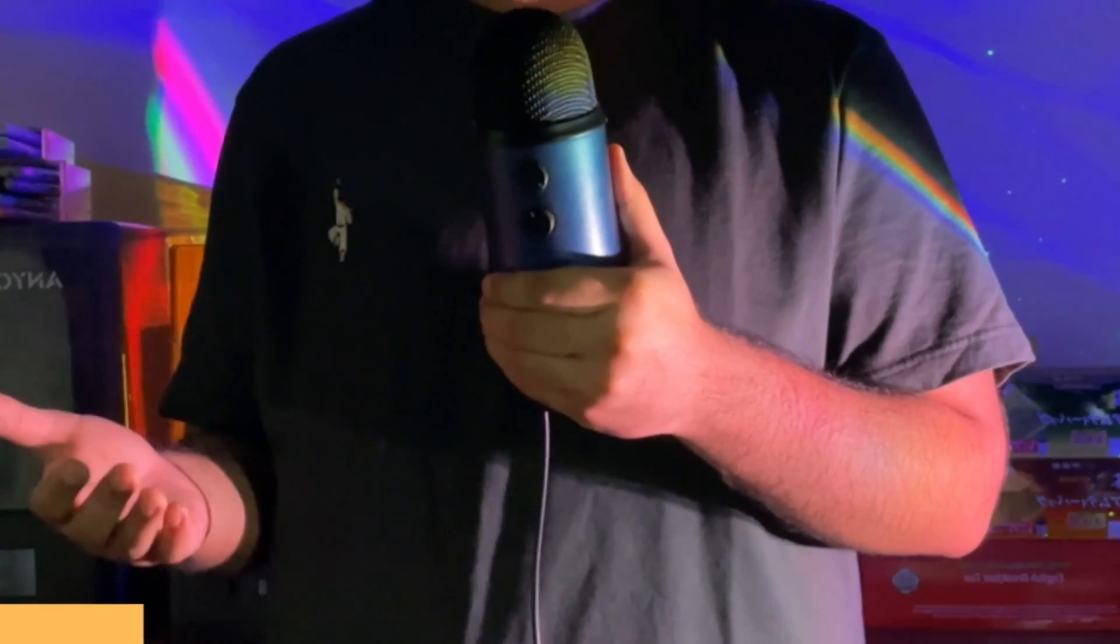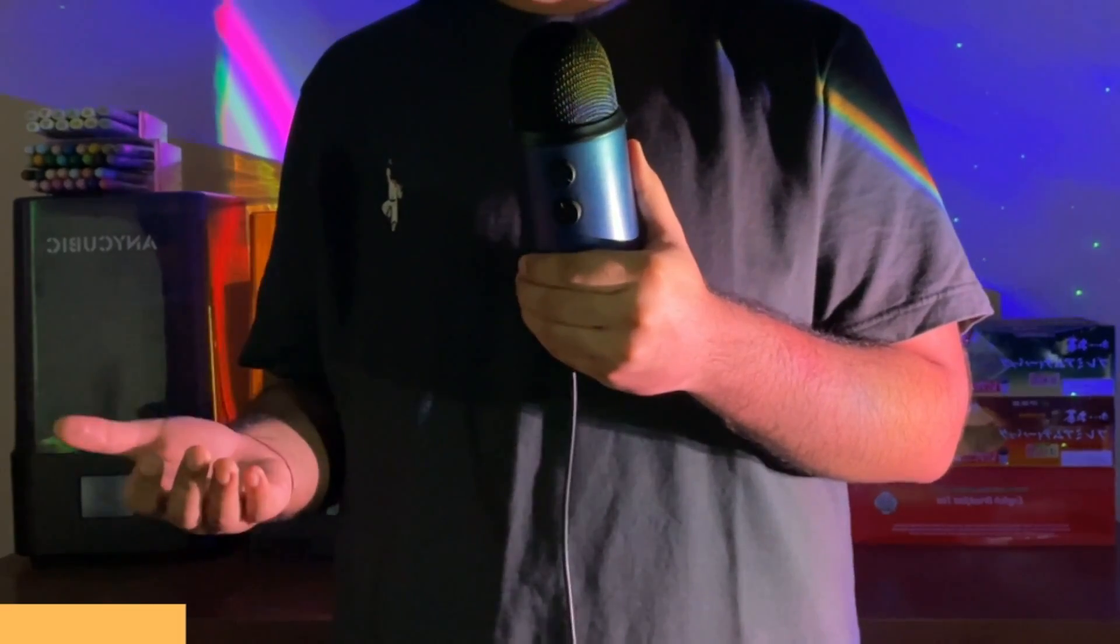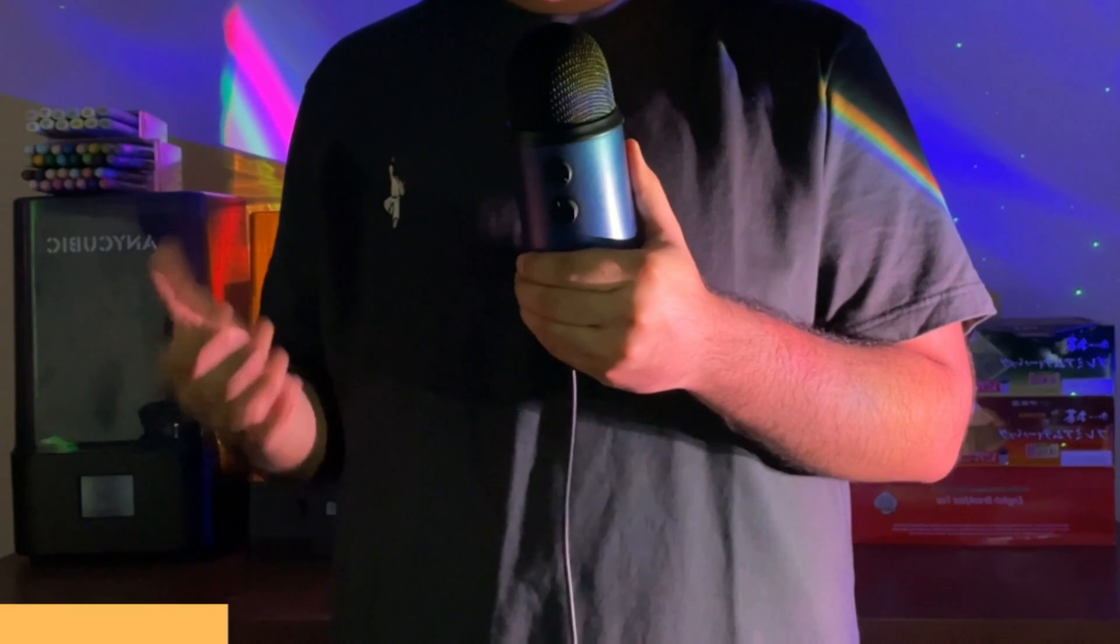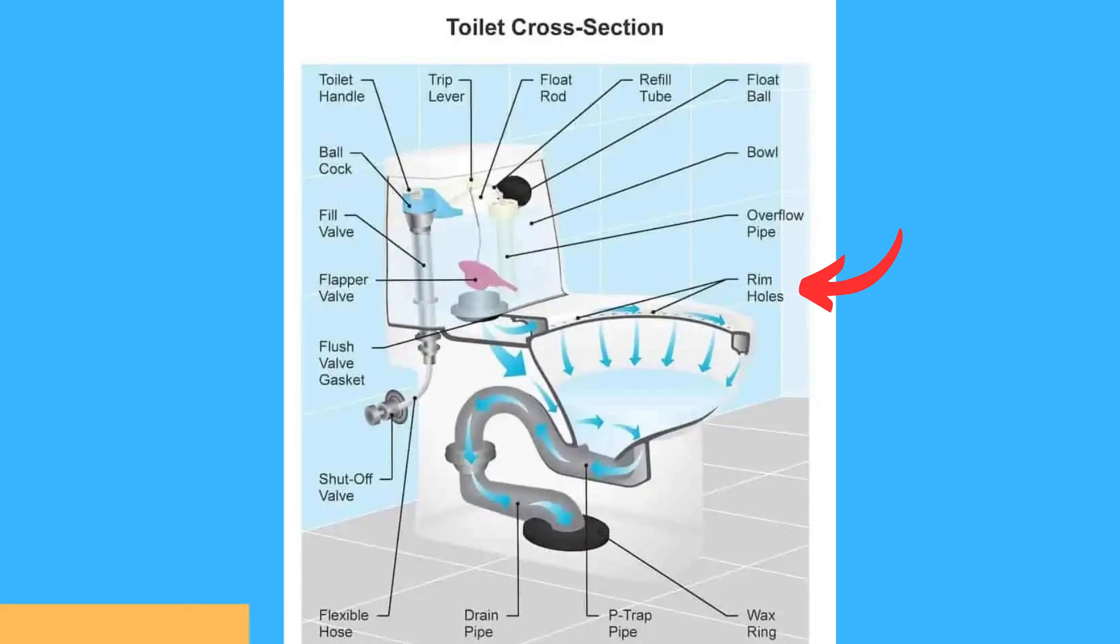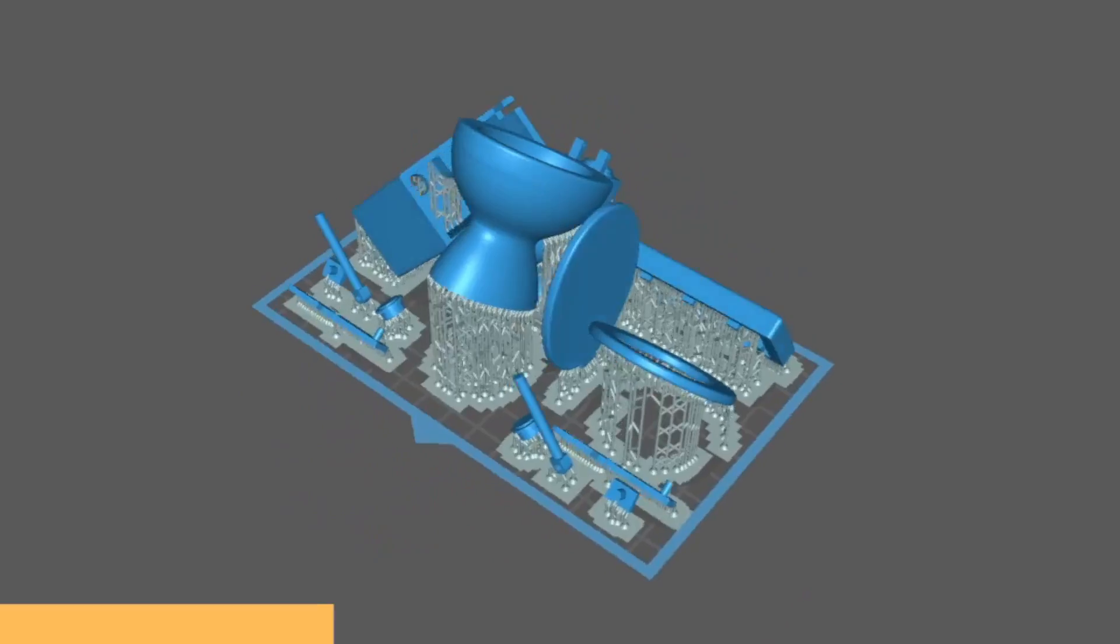After this major setback, my next best shot for research was Google and I quickly found out that toilets are much simpler than you would think. There's just a tank full of water that's used for flushing which is connected to the toilet seat and the toilet seat has holes in it which dispense the water into the toilet bowl. All of this will become much clearer in a second when I show you the 3D printed model I made.